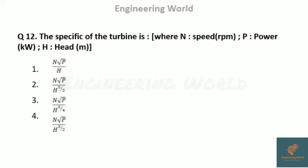The next question: the specific speed of a turbine. Here, n is speed in RPM, P is power, and H is head. For a turbine, specific speed equals n times the square root of P, divided by H raised to the power 5/4. The correct answer is option 3.